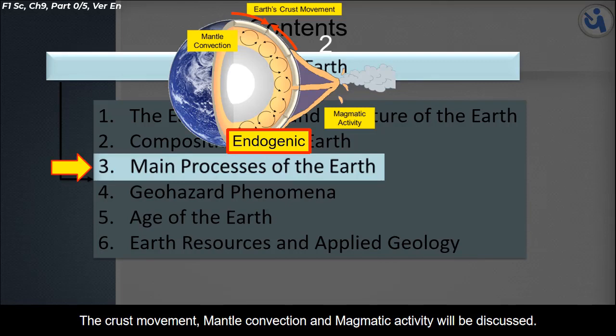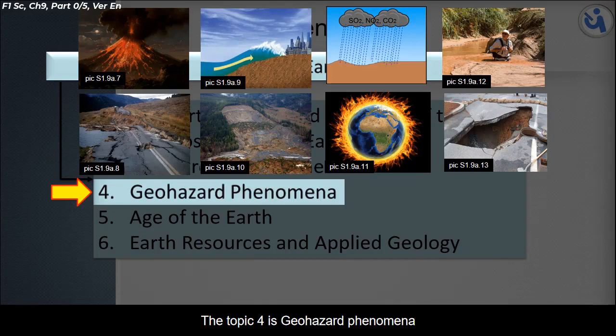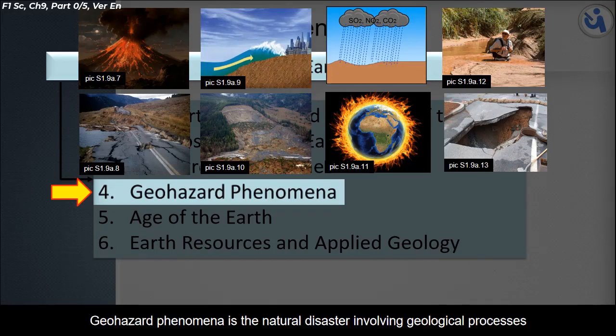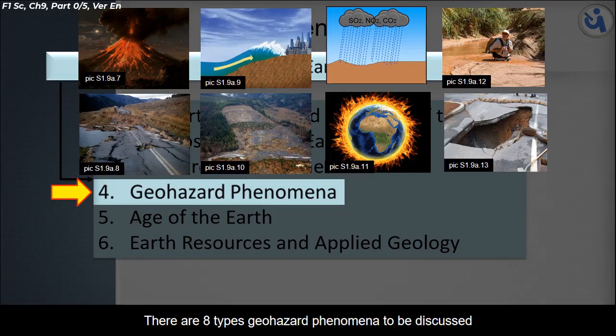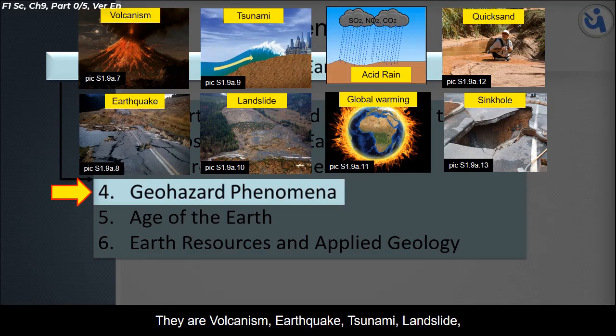Topic four is geohazard phenomena. Geohazard phenomena are natural disasters involving geological processes. There are eight types to be discussed: volcanism, earthquake, tsunami, landslide, acid rain, global warming, quicksand, and sinkhole.